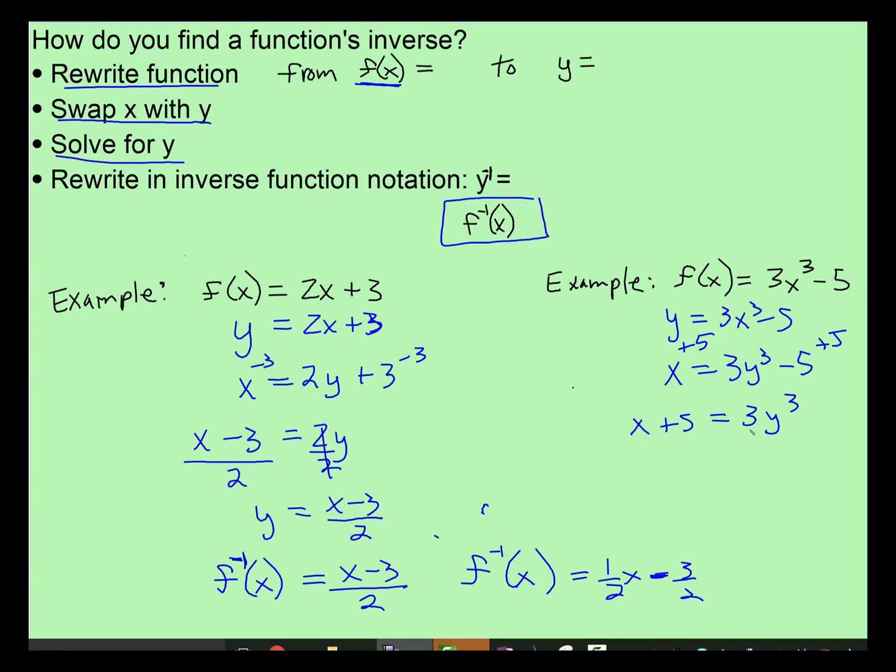Before we can do exponents, we need to divide everything. So we're going to divide both sides. Now the inverse of cubing something is taking the cube root. When we do that, we have to take the cube root of everything. So now we have y is equal to the cube root of x plus 5 over 3.